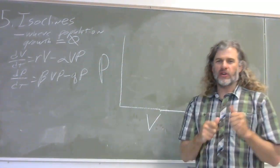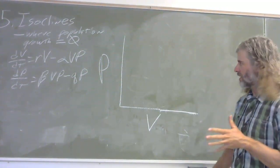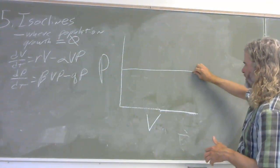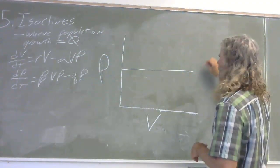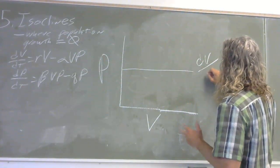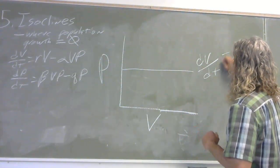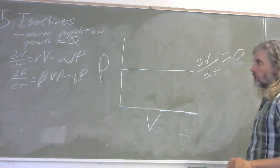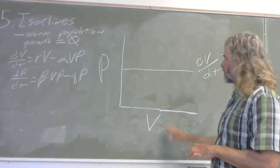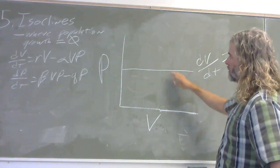Okay. So I've reset our space here so that I can draw this correctly this time. I'm going to draw the isocline for the prey. It's horizontal line. And this is where the change in the victims, the prey population is equal to zero.